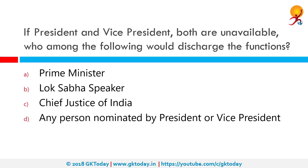If the President and Vice President are both unavailable, who among the following would discharge the functions? The correct answer is the Chief Justice of India. The President Discharge of Functions Act 1969 provides that the Chief Justice of India shall act as President in the event of the offices of both the President and the Vice President being vacant. When President Zakir Hussain died in office, the Vice President V. V. Giri acted as President. Later, when Giri resigned, CJI Justice Muhammad Hidayatullah became the Acting President of India.